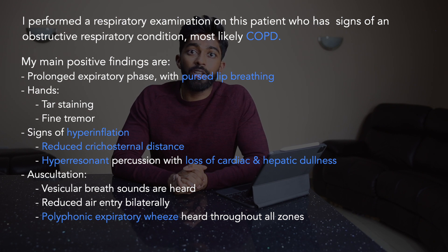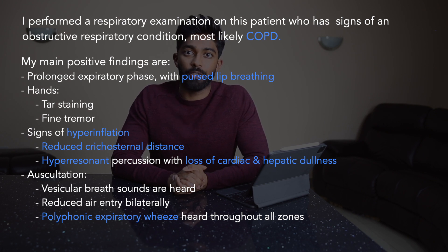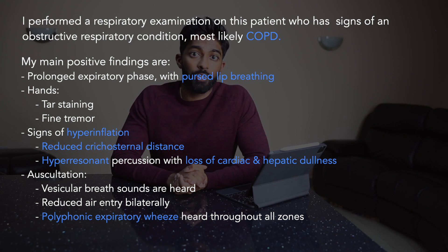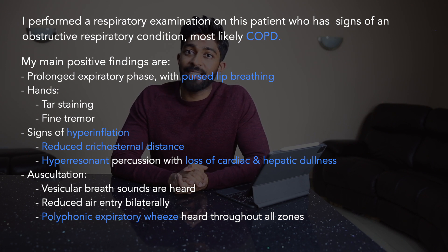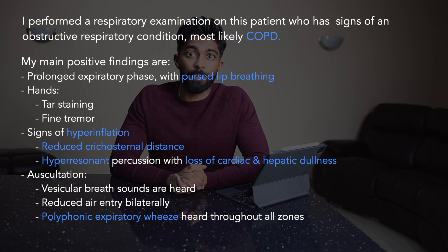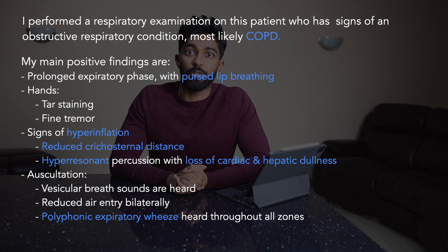Focusing on the hands, there was evidence of tar staining as well as a fine tremor indicating likely bronchodilator use. There were signs of hyperinflation, such as reduced cricosternal distance and hyper-resonant percussion with loss of cardiac and hepatic dullness. On auscultation of the lungs, vesicular breath sounds are heard with reduced air entry bilaterally and a polyphonic expiratory wheeze heard in all zones.